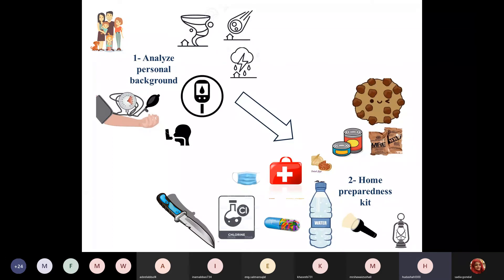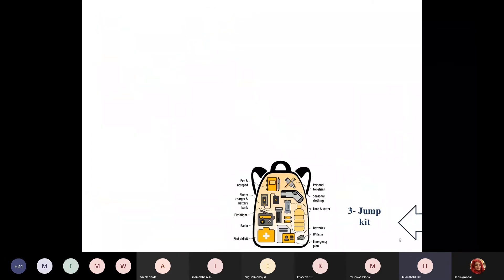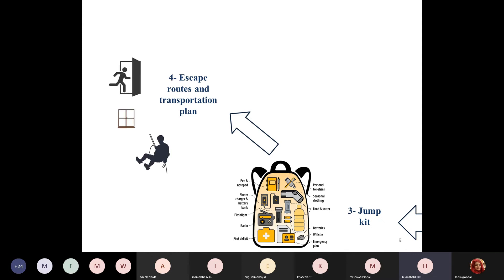Number three is the jump kit - just a go-to bag containing all your essentials. You just grab it and evacuate your area. Number four: escape routes and transportation plan. In case of any disaster you must know from where you will take an exit, either through a window with a rope or by stairs, and what transport you will be using - either your personal car, a local bus, or you will prefer walking. It completely depends on the type of disaster you're facing, like earthquakes or volcanic eruption.